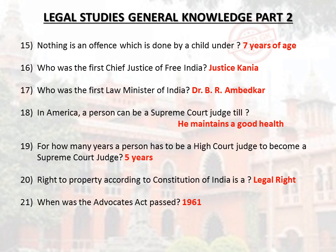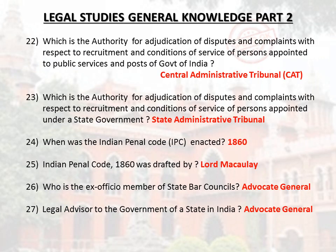Right to property according to the Constitution of India is a legal right. When was the Advocates Act passed? 1961. Which is the Authority for Adjudication of Disputes and Complaints with Respect to Recruitment and Conditions of Service of Persons Appointed to Public Services and Posts of Government of India? Central Administrative Tribunal (CAT). Which is the corresponding authority for persons appointed under a State Government? State Administrative Tribunal.